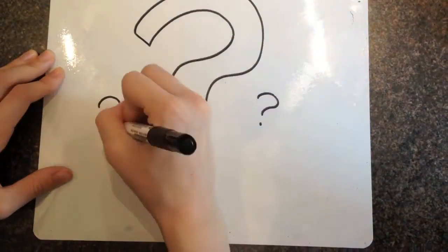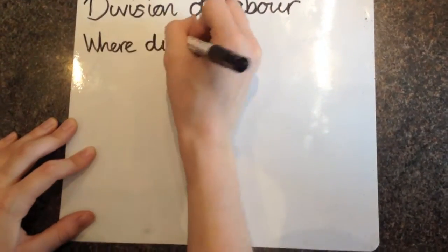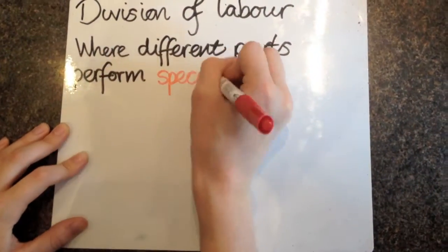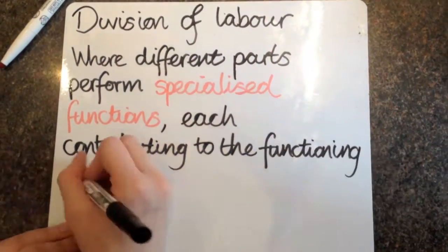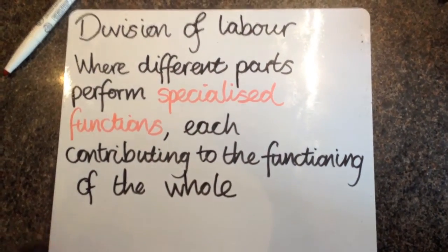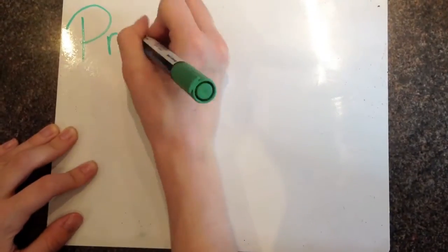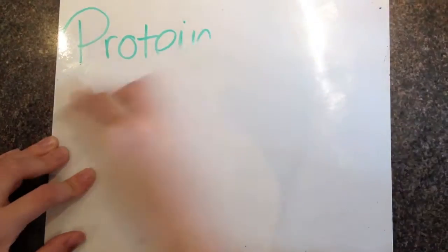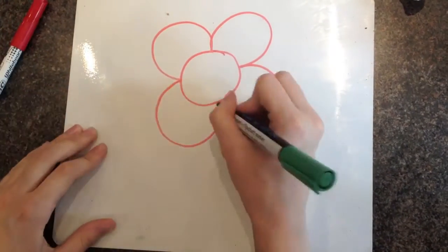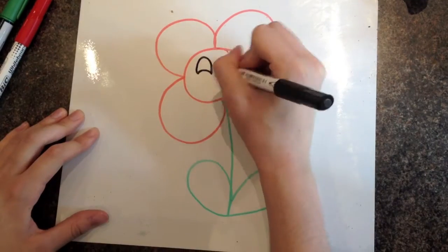So what exactly is the division of labour? Any system where different parts perform specialised functions, each contributing to the functioning of the whole. Synthesis of a protein is an example of the division of labour. Some cells produce hormones such as insulin and auxin found in plants.